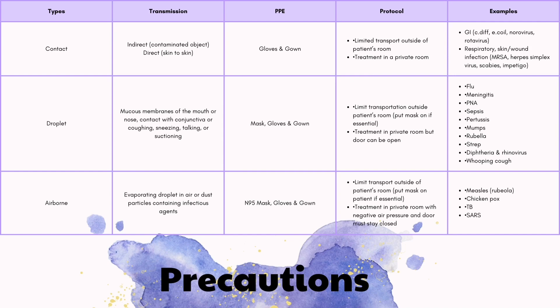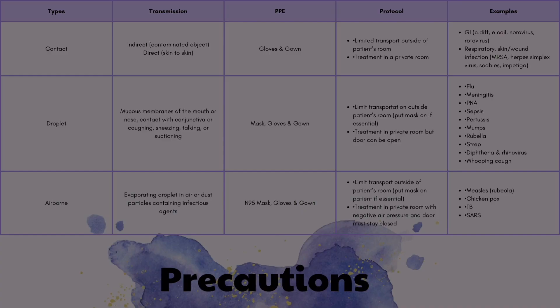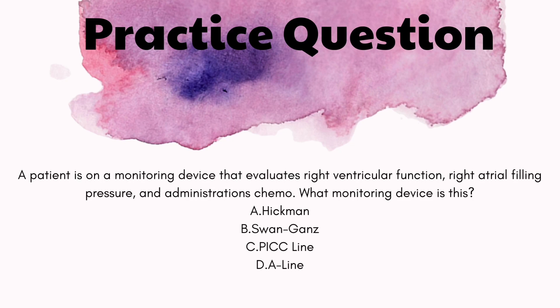Next we have precautions: contact, droplet, and airborne. With contact, you wear gloves and gown. With droplet, you wear mask, gloves, and gown. With airborne, you wear an N95 mask, gloves, and gown. It is really important to know what sicknesses and diseases go with what types of precautions, which tells you what PPE you need to wear into the room.